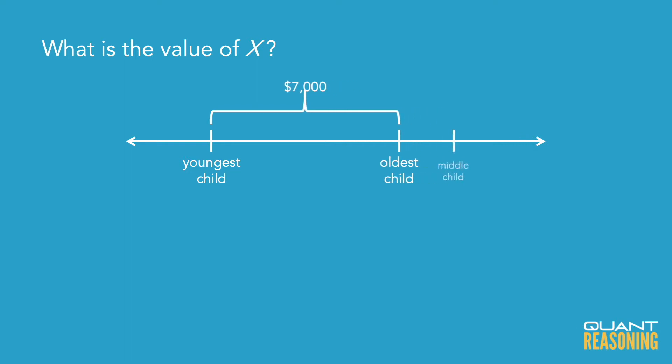So that puts the middle child 9,000 to the right of the youngest child, which would be 2,000 to the right of the oldest child.